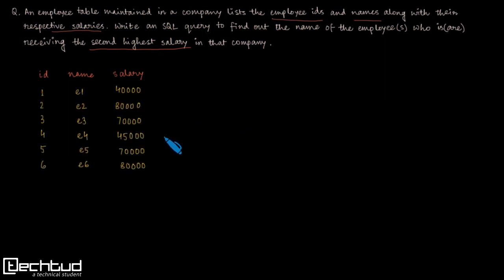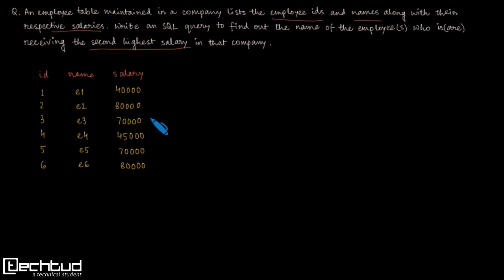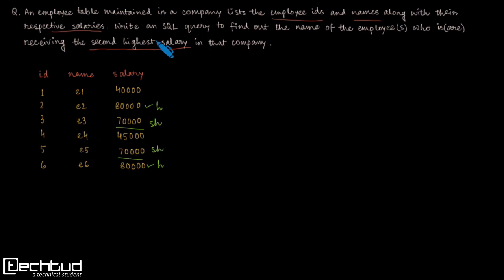Here is a sample table. We have six rows populated with IDs from one to six, names as E1 to E6, and some salaries. Now, going back to the problem — we need to find the name of the employees having the second highest salary. The highest salary in this example is 80,000, and the second highest salary is 70,000. We have two employees receiving the second highest salary, so the final result should contain E3 and E5, as those are the two people receiving the second highest salary.